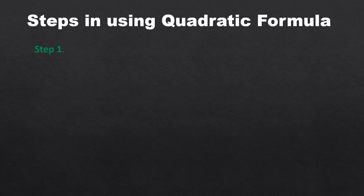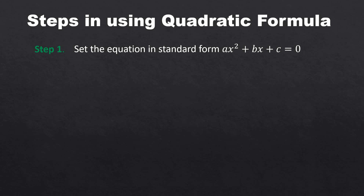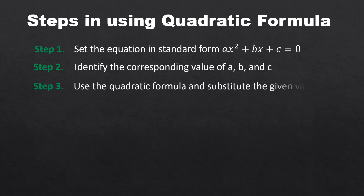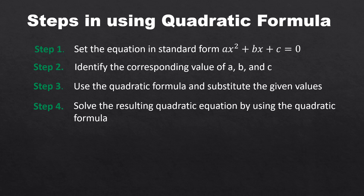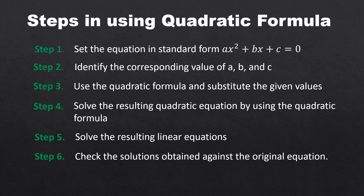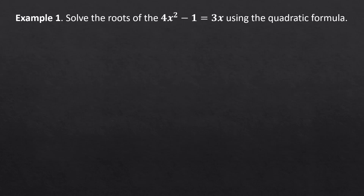Here are the steps to follow when using the quadratic formula. Step 1: Set the equation in standard form ax squared plus bx plus C is equal to 0. Step 2: Identify the corresponding values of A, B, and C. Step 3: Use the quadratic formula and substitute the given values. Step 4: Solve the resulting quadratic equation. Step 5: Solve the resulting linear equations. Step 6: Check the solutions obtained against the original equation.